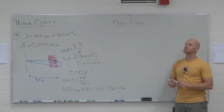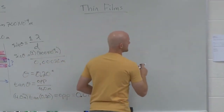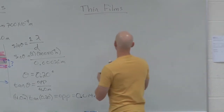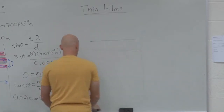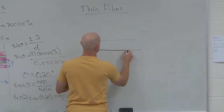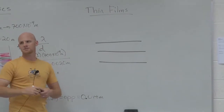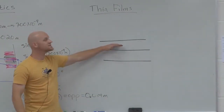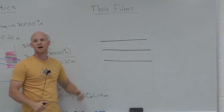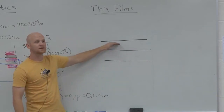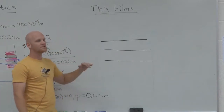Another place where interference plays a big role is in thin films. So let's say we've got some surface here — a marker that actually writes, stacked on top of some other surface. This can work in a variety of contexts: one type of glass on another, translucent plastic on glass, or like the question we're going to look at — gasoline sitting on a film of water, like if there was a gas spill on the ocean.